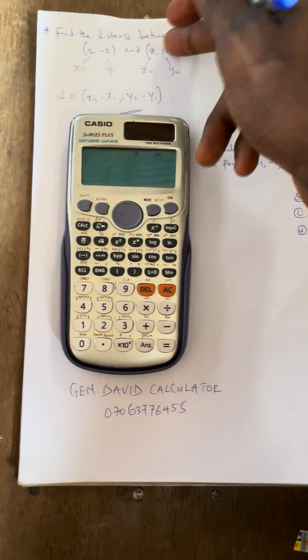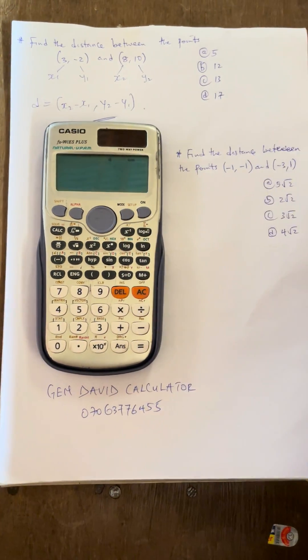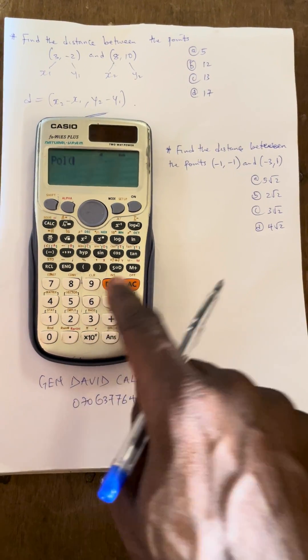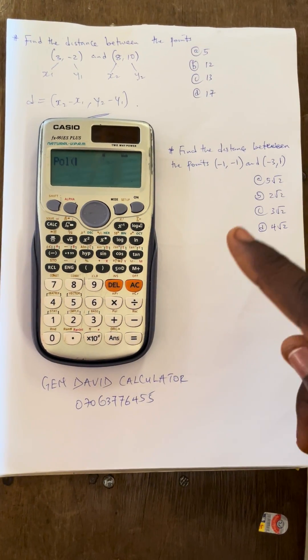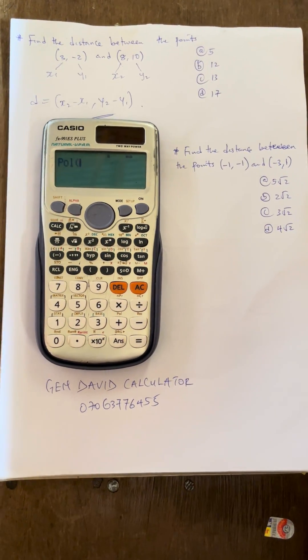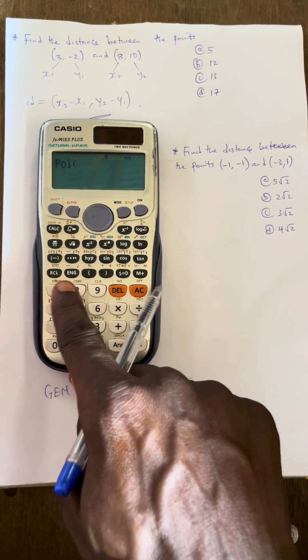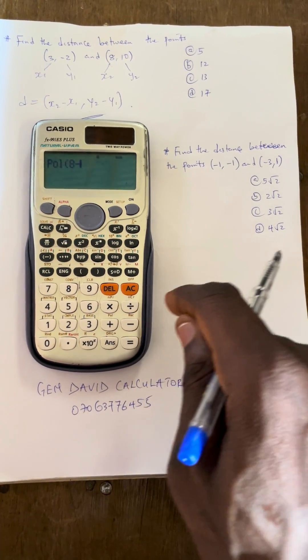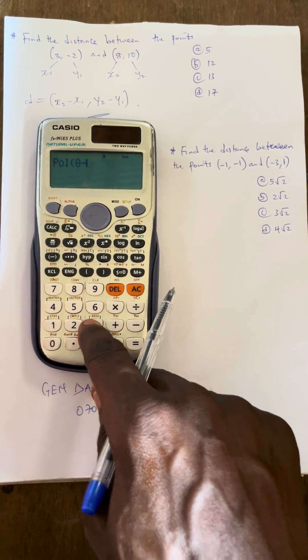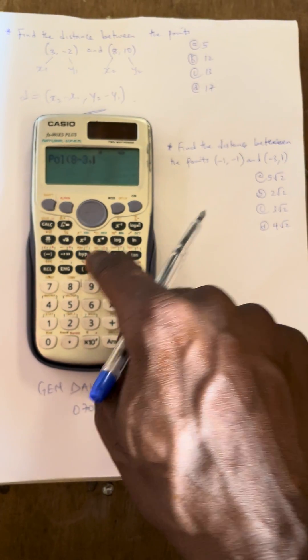Let us go with the first question here. Before you start, you press shift and you press the pull. That is shift and the plus sign. After you press that, you now press your x2, which is 8, minus your x1, which is 3. Then your comma is shift and close the bracket.